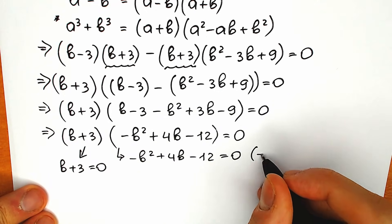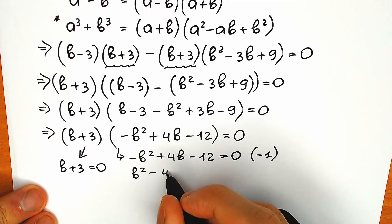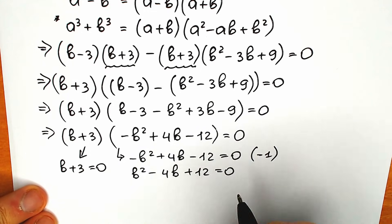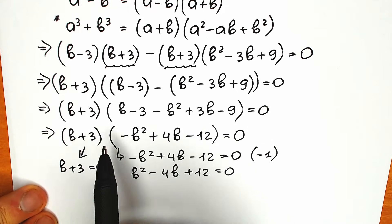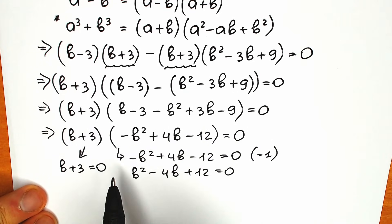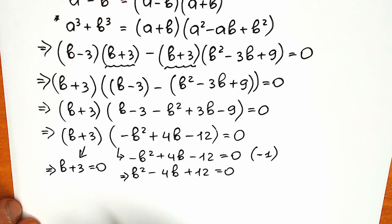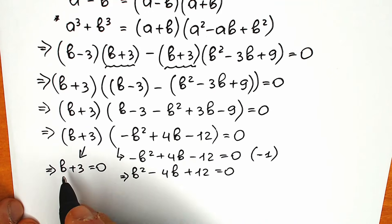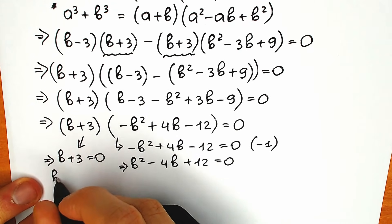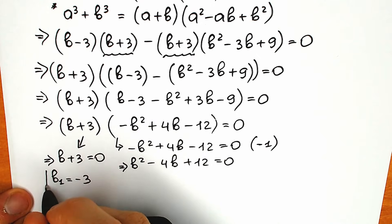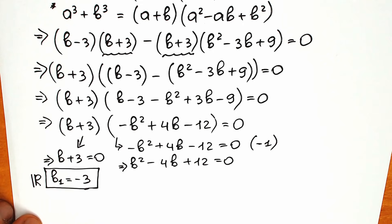We can multiply the second equation by minus one to get b squared minus 4b plus 12 equals 0, which is a really clean expression. From the first branch we can instantly solve for b: b₁ equals minus 3. This is our first real number root.